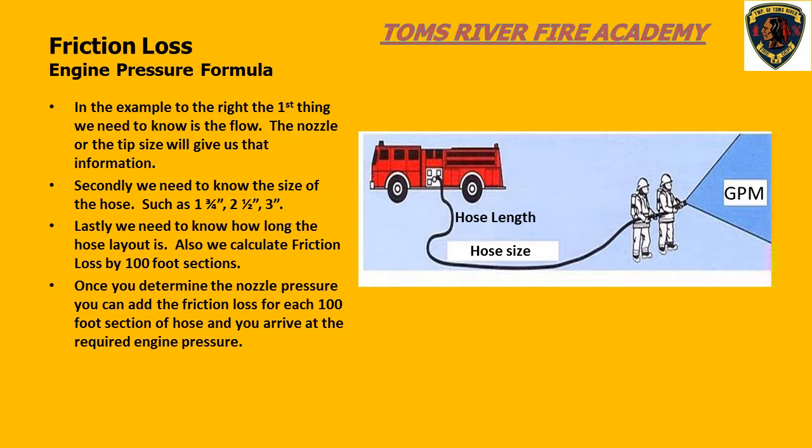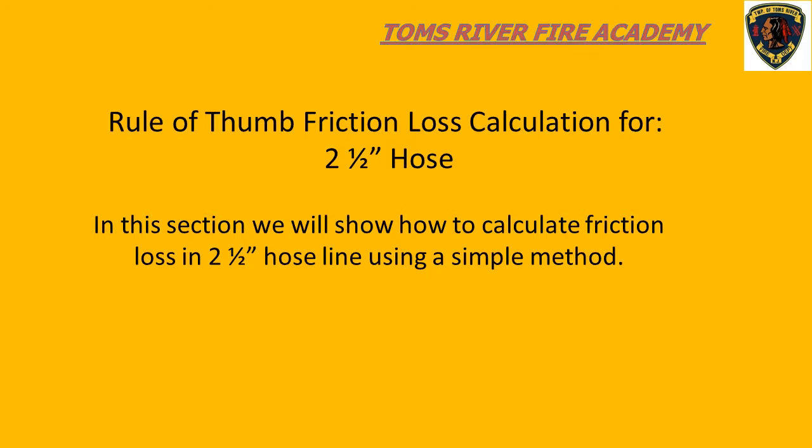One important point: friction loss is calculated on each 100-foot section of hose — don't be confused by 50-foot hose lengths. We are going to use a rule of thumb formula to calculate friction loss in 2.5-inch hose. We use rule of thumb formulas for this class because they are easy to remember at 3 AM. These formulas are not exact, but are close enough for our purposes.